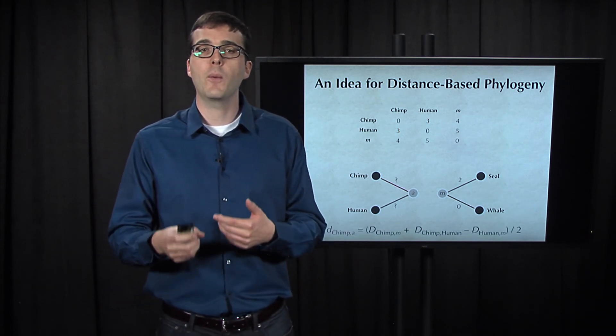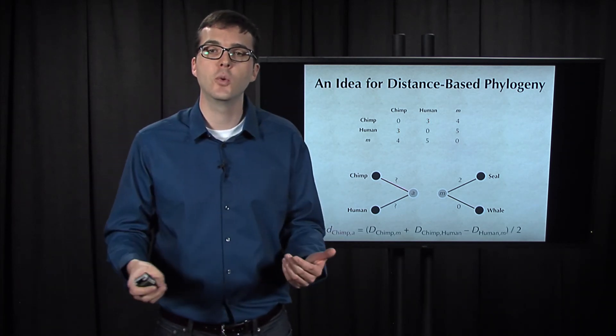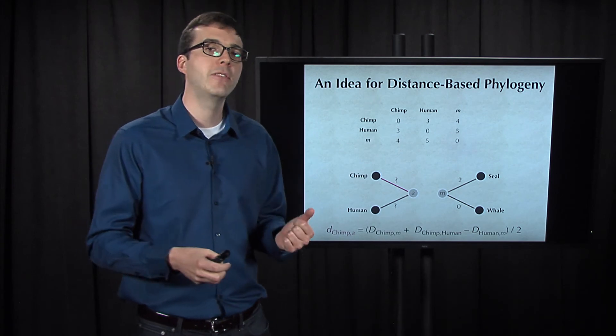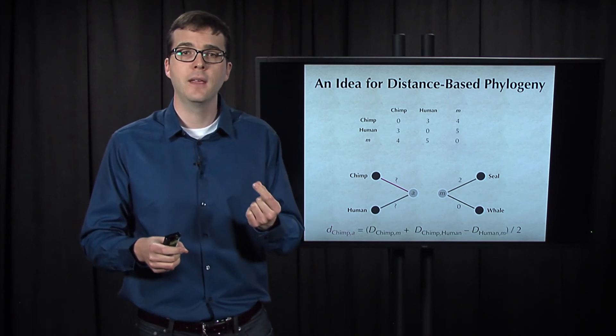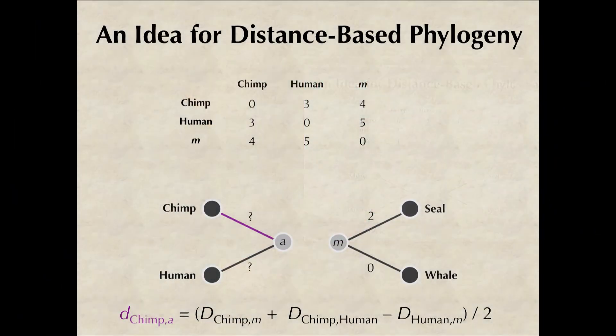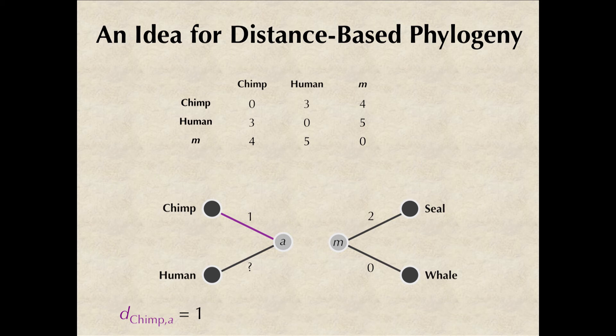Using the formula that we had before for the distance from a node to its parent, we're going to have that the distance from chimp to a is the distance from chimp to m plus the distance from chimp to human minus the distance from human to m all divided by 2. This gives us, when we plug in the values, 2 divided by 2 or 1.